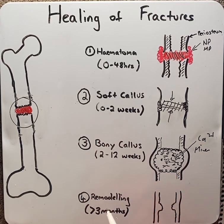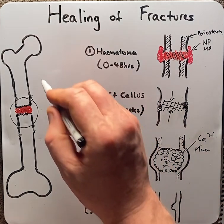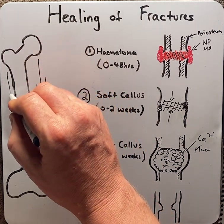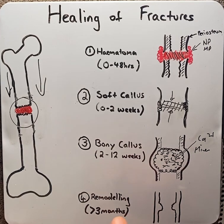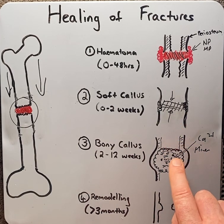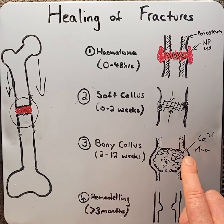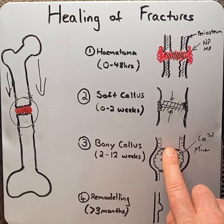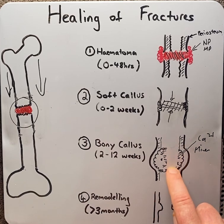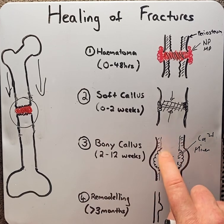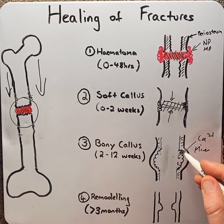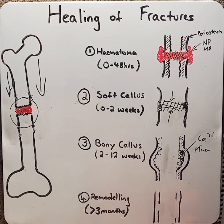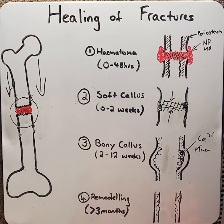Moving into the remodelling phase, as we start to weight bear and put force down into the bone, this causes remodelling. Osteoclasts start to take away tissue that is not physically stressed, so we start to lose some tissue, whereas the areas that are stressed will thicken. This will ultimately reduce the size of the bony callus and hopefully restore the bone to its original integrity.